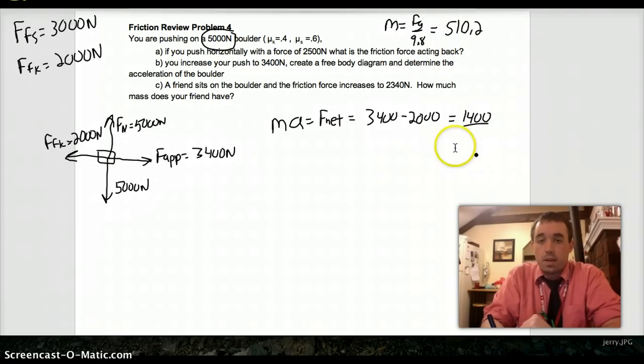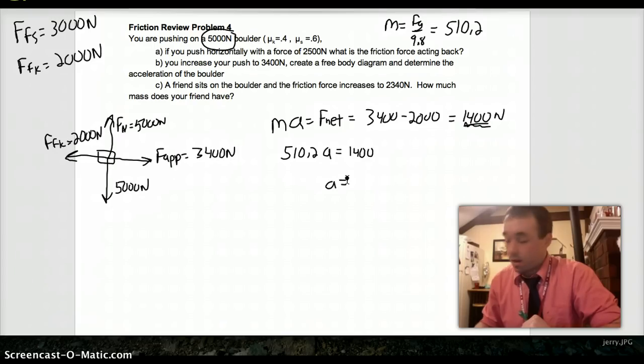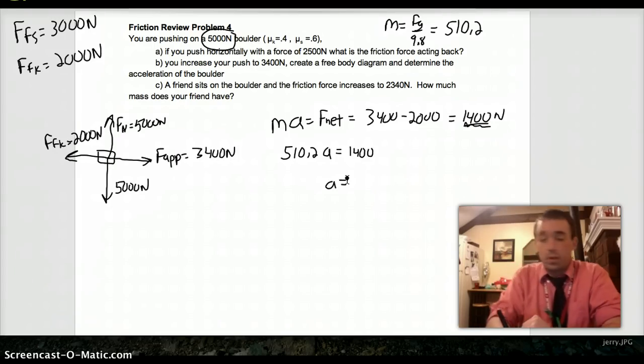So, divide 1,400 Newtons. So, the mass, 510.2, times the acceleration is 1,400, which gives us an acceleration of 1,400 over 510, 2.74 meters per second squared.